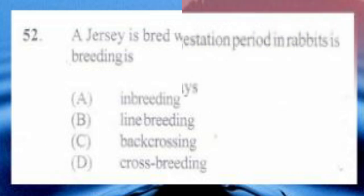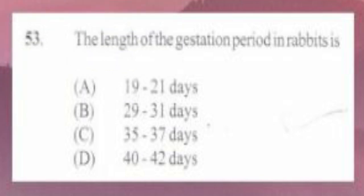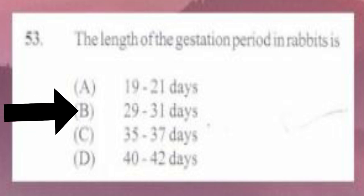Question number 53. The length of the gestation period in rabbits is: A. 19 to 21 days, B. 29 to 31 days, C. 35 to 37 days, D. 40 to 42 days. The answer is B, 29 to 31 days.